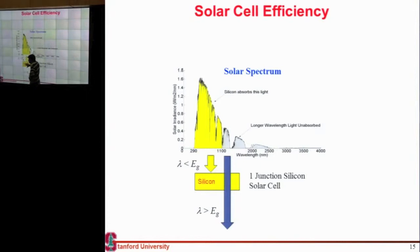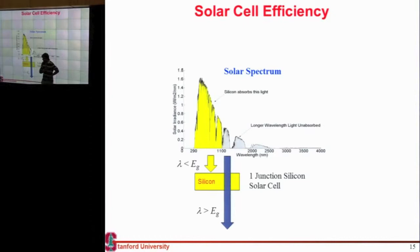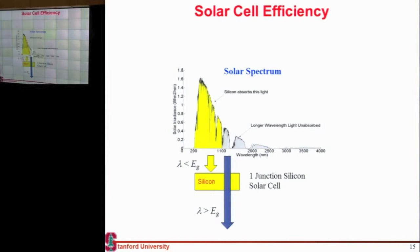What energy is the absorbed light collected at? Assuming you cannot collect hot carriers — they just relax — you're going to collect that energy at the maximum potential difference equal to the band gap. So what should the efficiency be? Should it be the Shockley-Queisser limit? One person thinks so. Let's check by integrating or estimating the spectrum.